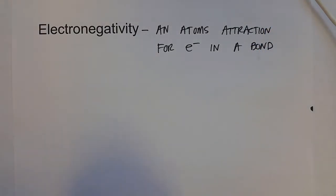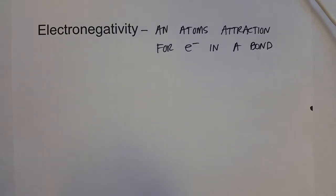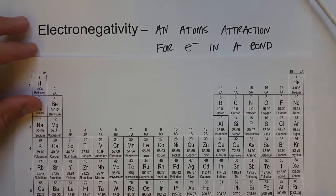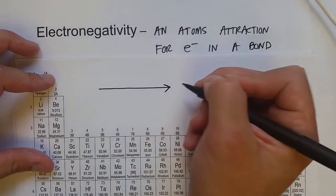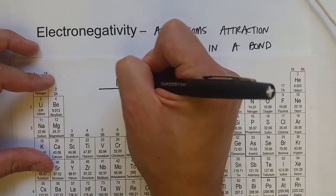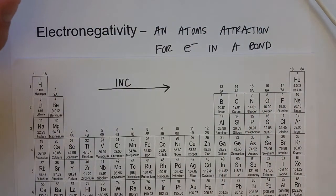And so it turns out that if we look at a periodic table, atoms to the left, as we go left to right, have an increasing electronegativity.